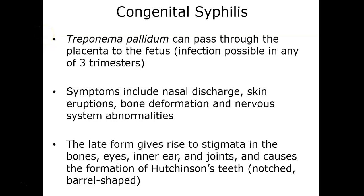Congenital syphilis occurs when the bacterium passes through the placenta into the fetus, and it's possible during any of the three stages. Symptoms include nasal discharge, bone deformation, nervous system abnormalities, and stigmatisms in the bone, eyes, inner ear, and joints. There is also the presence of Hutchinson's teeth, where the teeth develop a notched, barrel-shaped appearance — a major symptom of congenital syphilis.